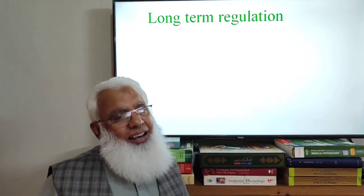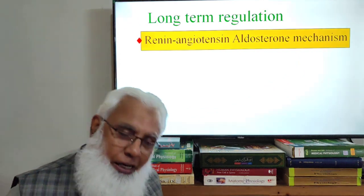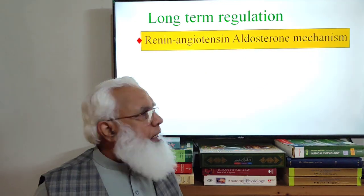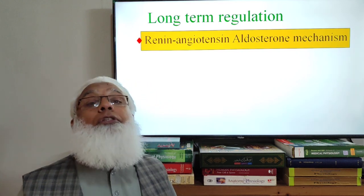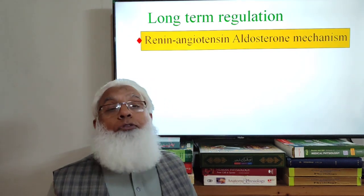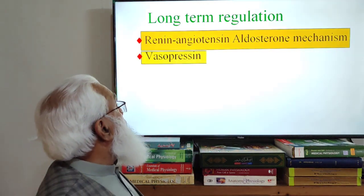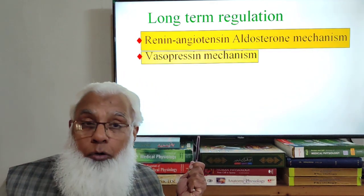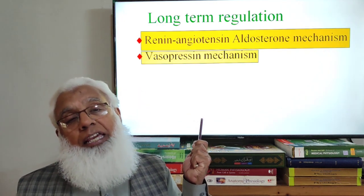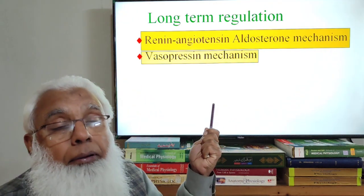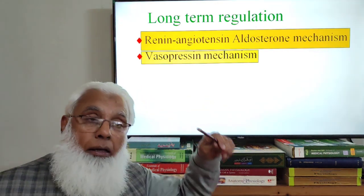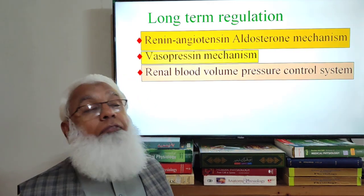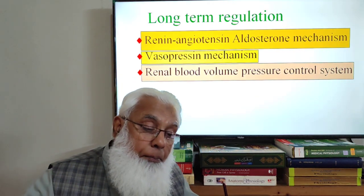The long-term regulator is the kidney. Long-term blood pressure control involves the renin-angiotensin-aldosterone system — which may also be involved in intermediate mechanisms but continues functioning long-term. Aldosterone is responsible for reabsorption of sodium and water. Vasopressin also contributes to long-term water absorption. The kidney, through the renal body fluid pressure control system, regulates blood volume and is the final long-term regulator of blood pressure.